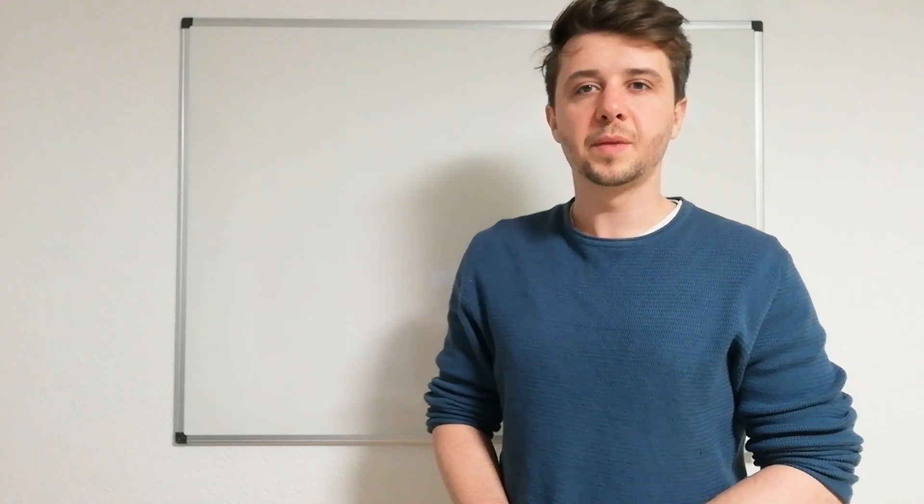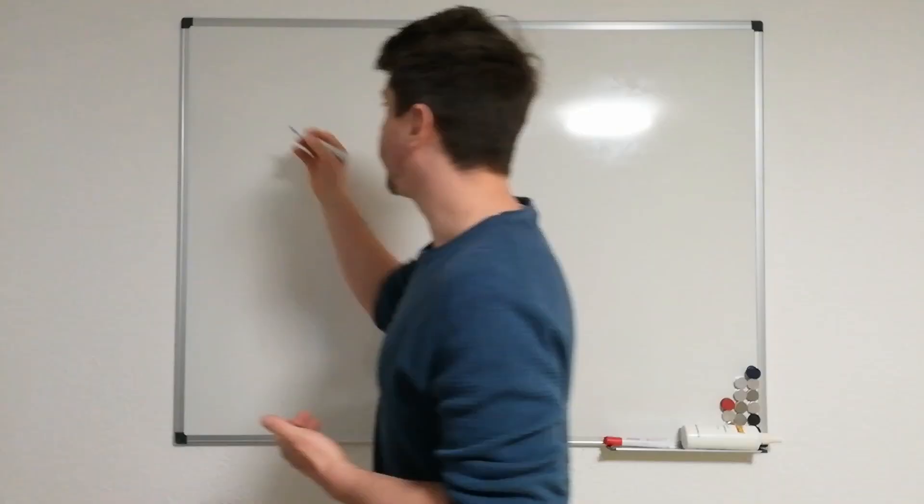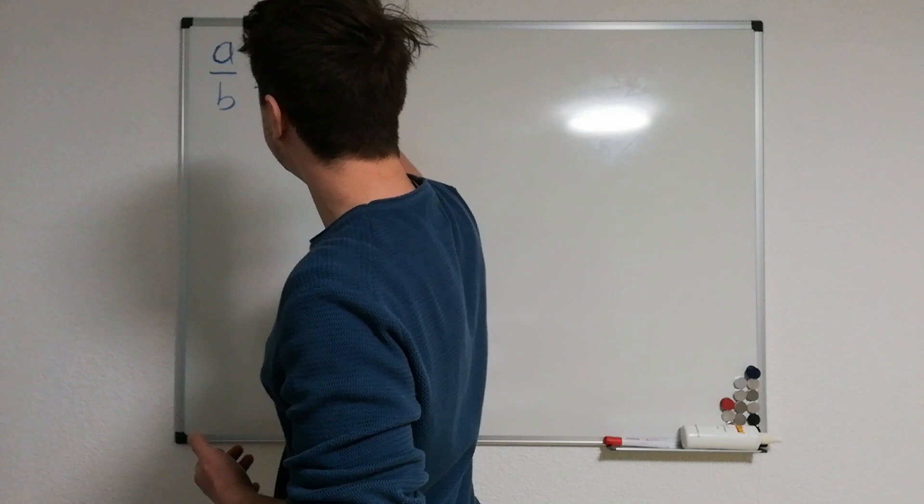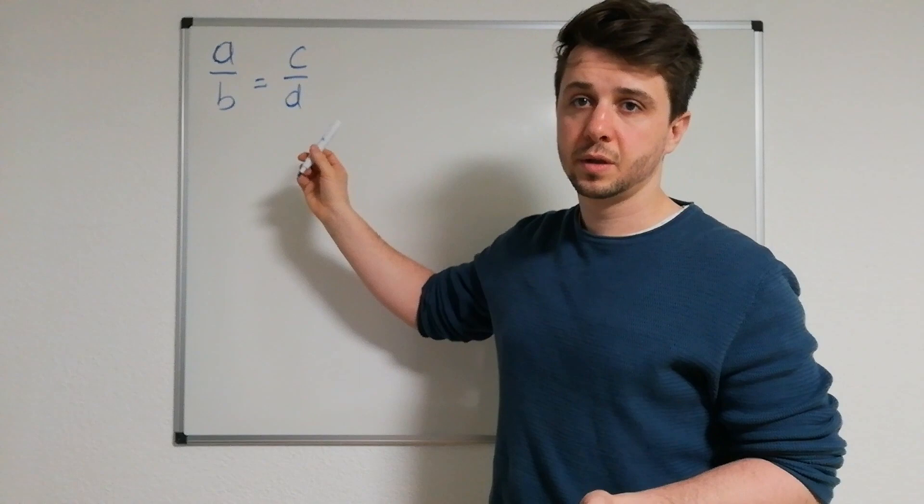Hey guys, I'll show you very simply how you can do crosswise multiplication. We've got the base structure a divided by b equals c divided by d. You can put anything you like into those instead of those variables.